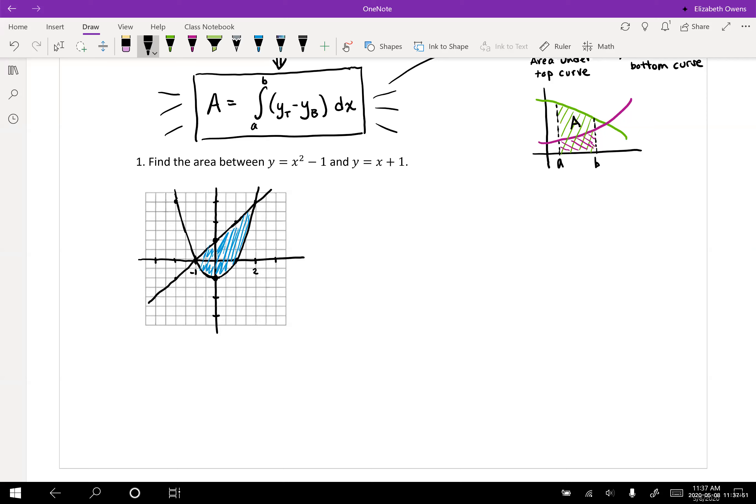There is another way to find those if your graph isn't spot on, and those are the intersection points of the two functions. The intersection points are going to give us our limits of integration.